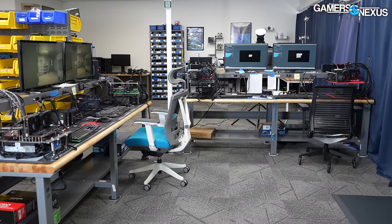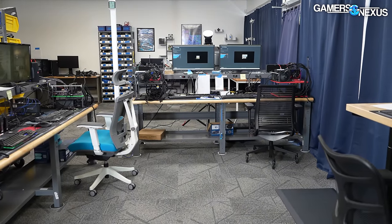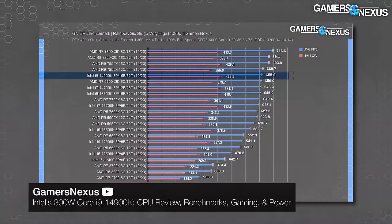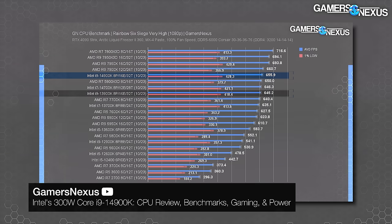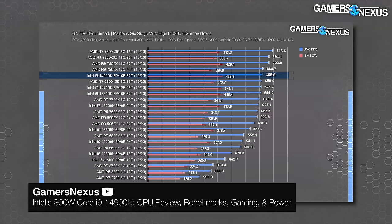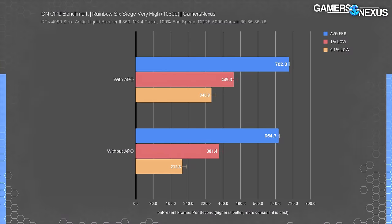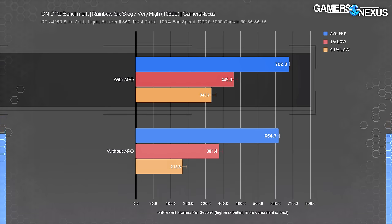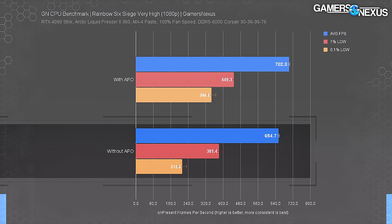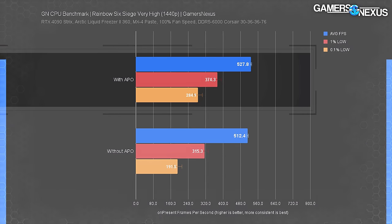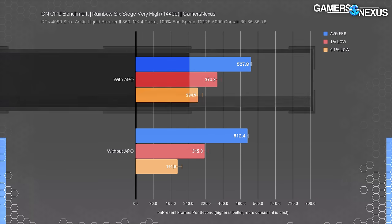Now we get to the less exciting results. For our CPU reviews, our Rainbow Six Siege benchmarks use 1080p very high for testing, where frame rates often exceed 600 FPS on high-end CPUs. The improvement in our 1080p very high test was much lower at 702 FPS average with APO against 655 FPS average without APO — that's a 7.2% uplift. At 1440p, enabling APO gave us a boost of only 3%. That points to the GPU being the limiter for the 1080p test.